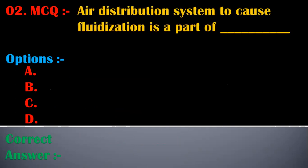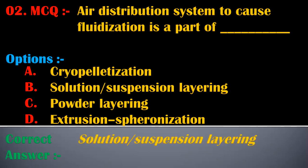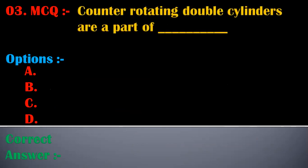Second MCQ: air distribution system to cause fluidization is a part of — options are: A) cryopelletization, B) solution suspension layering, C) powder layering, D) extrusion spheronization. The correct answer is option B, solution suspension layering. Air distribution system to cause fluidization is a part of solution suspension layering.